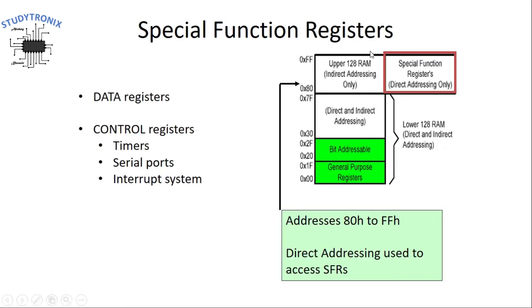The special function registers fall into two categories: data registers and control registers. Data registers are used for storing values or data — examples include the accumulator, the B register, and all port registers. Control registers are SFRs used for configuring the peripherals present in the 8051. For example, the timer has SFRs like TMOD and TCON for configuring the timer. Similarly, serial ports and the interrupt system also have SFRs for configuration.